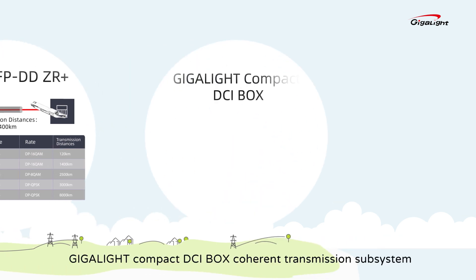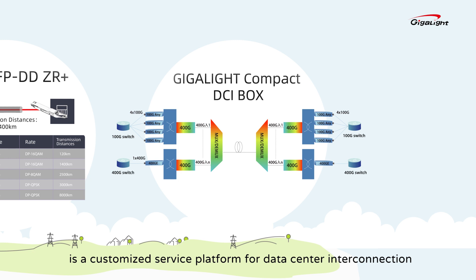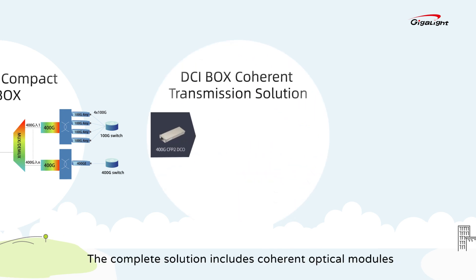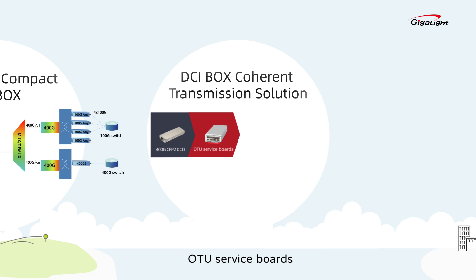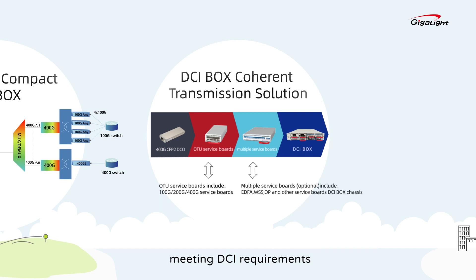Gigalight's Compact DCI Box coherent transmission subsystem is a customized service platform for data center interconnection and metropolitan area network WDM applications. The complete solution includes coherent optical modules, OTU service boards, multiple service boards, and DCI box chassis equipment, meeting DCI requirements.